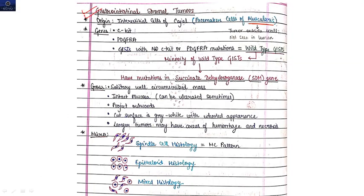First come to origin of the tumor. It arises from interstitial cells of Cajal, which are basically pacemaker cells. Genes which are mutated are c-KIT and PDGFRA. These are the two most important genes which are mutated here.